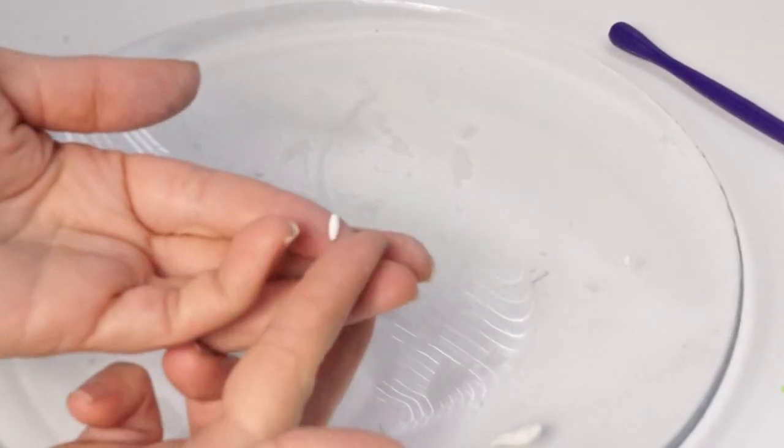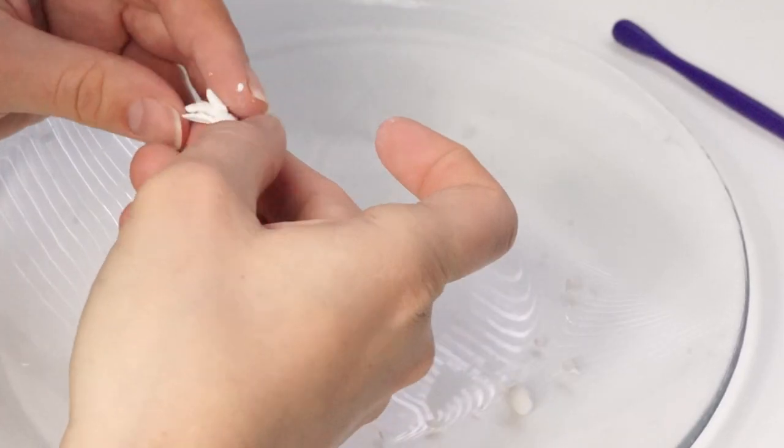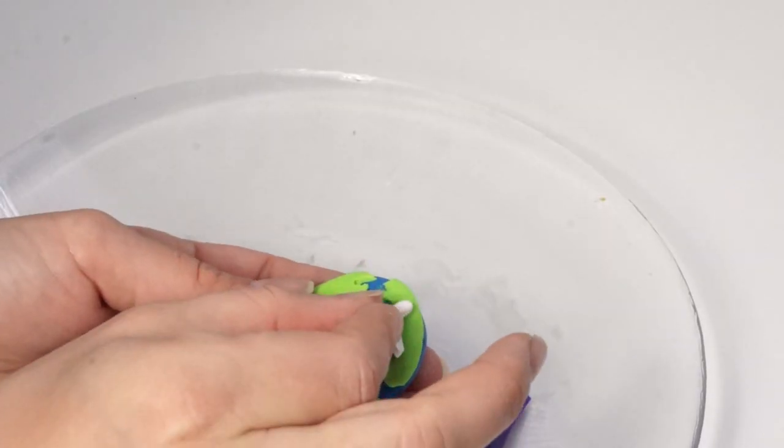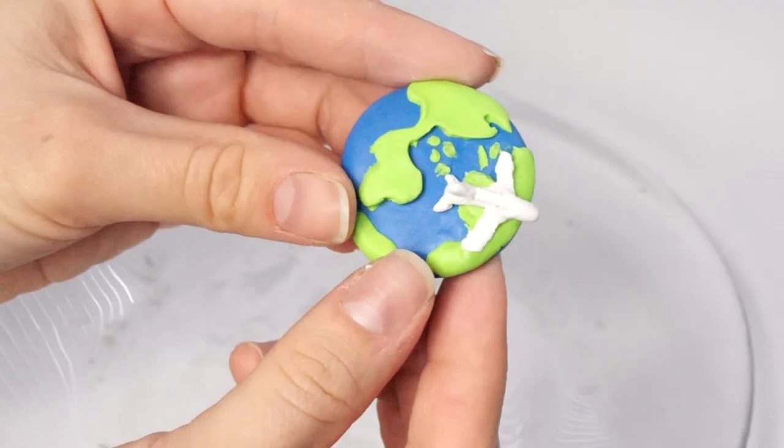Next you want to take another small piece of clay to make the vertical fin, which is the shark-like fin that goes on the back of the plane. It's all coming together.